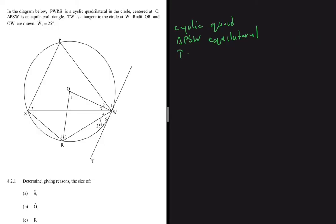TW is a tangent to the circle — keyword: tangent. The radius OW is drawn. We are also told that W1 equals 25 degrees. For all the questions we're going to answer, we'll stick to these keywords, except for basic things like angles on a straight line.